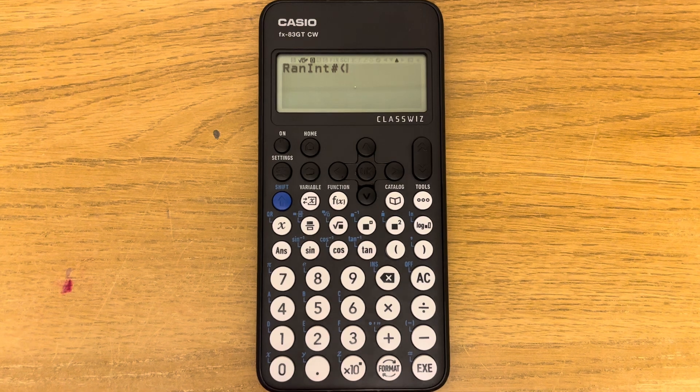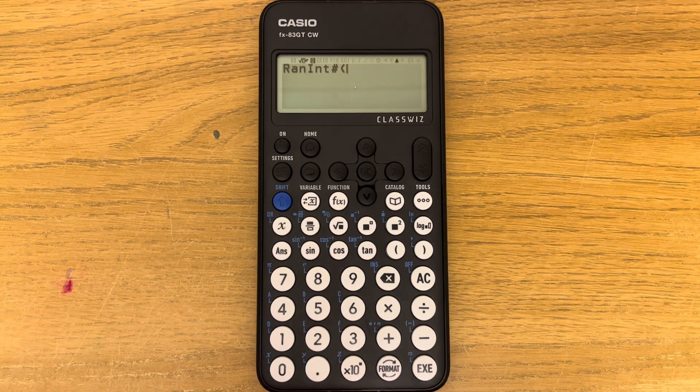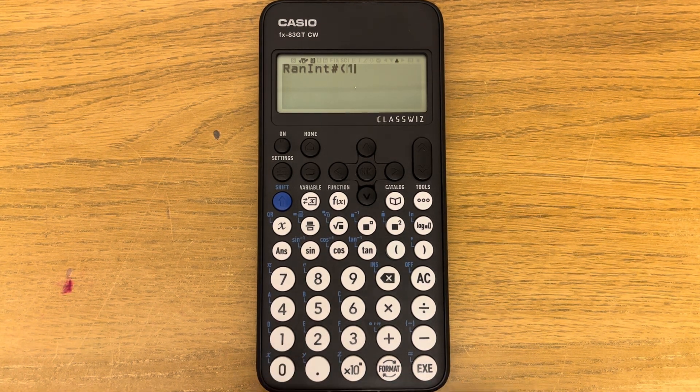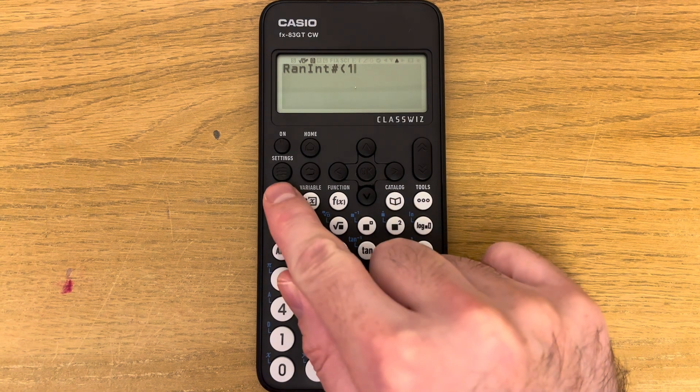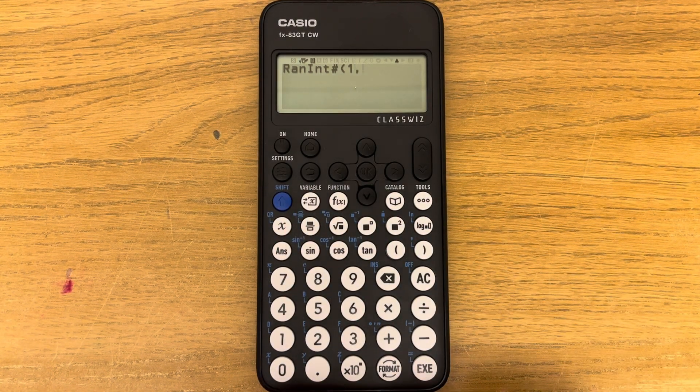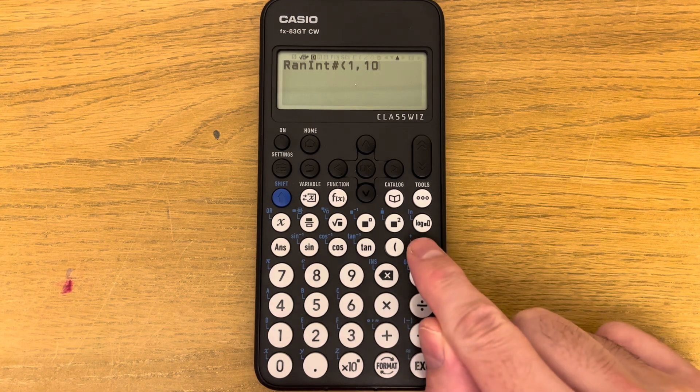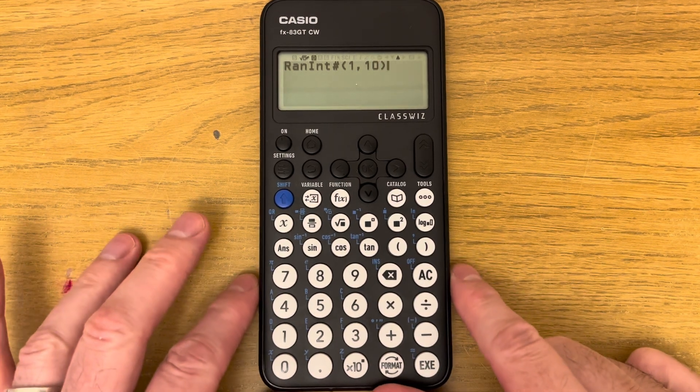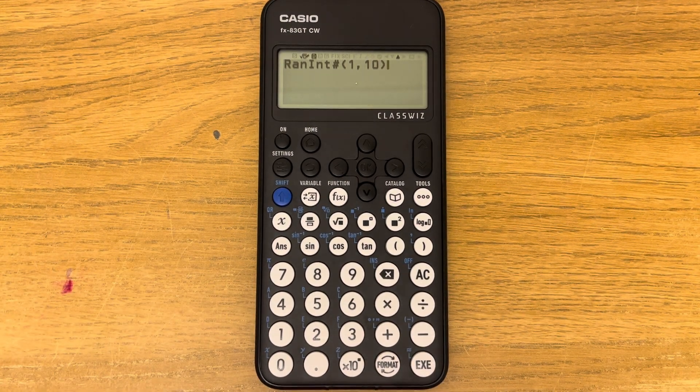random numbers between. So if you want random numbers between 1 and 10, press 1, then Shift, right bracket, then 10, and close your bracket. This is now set to give random numbers between 1 and